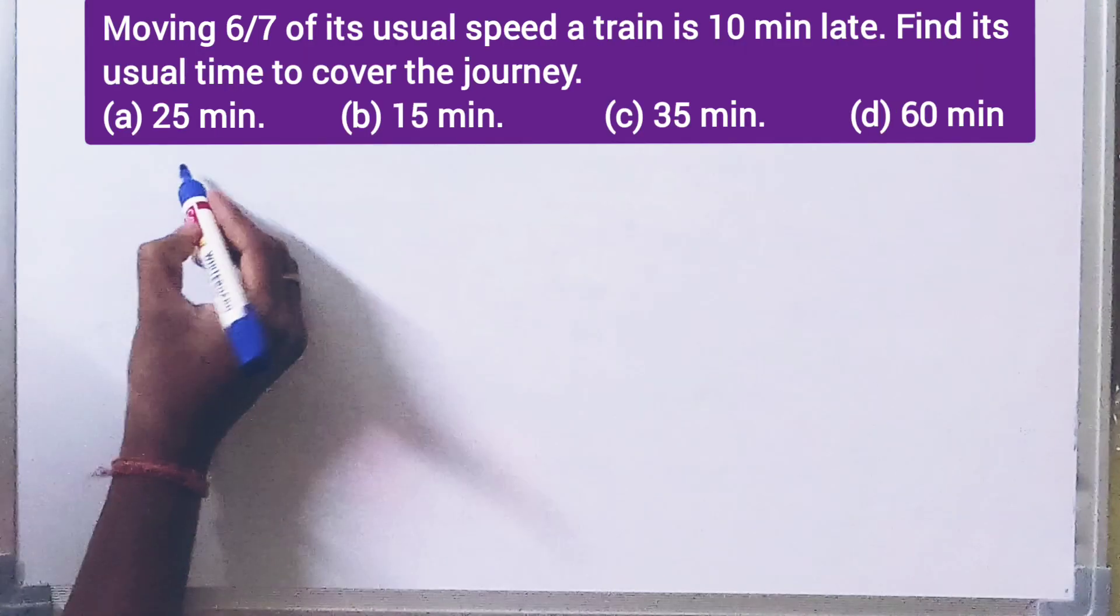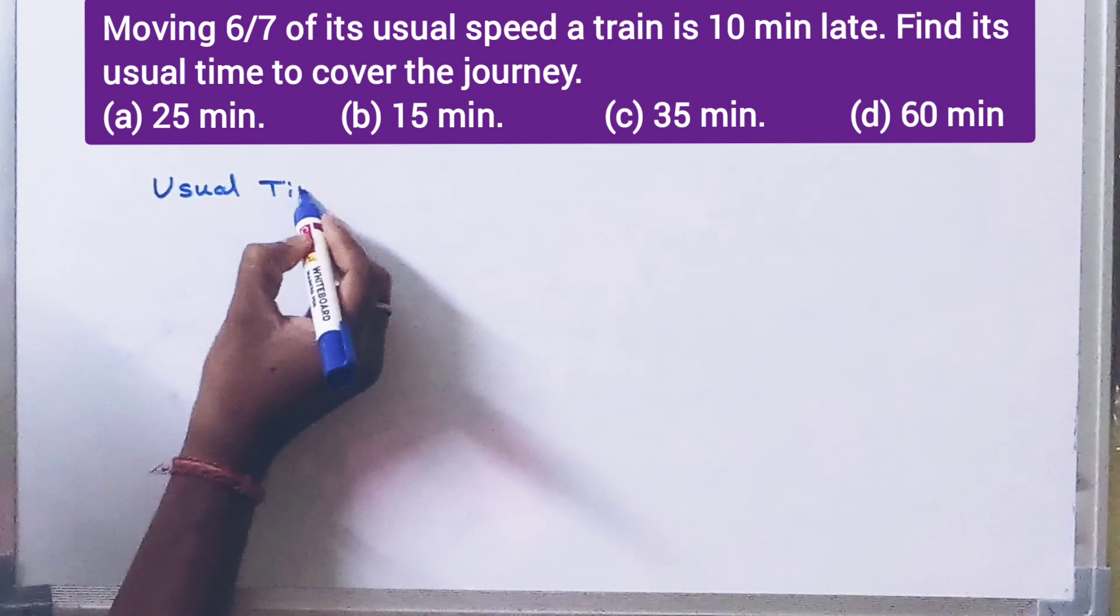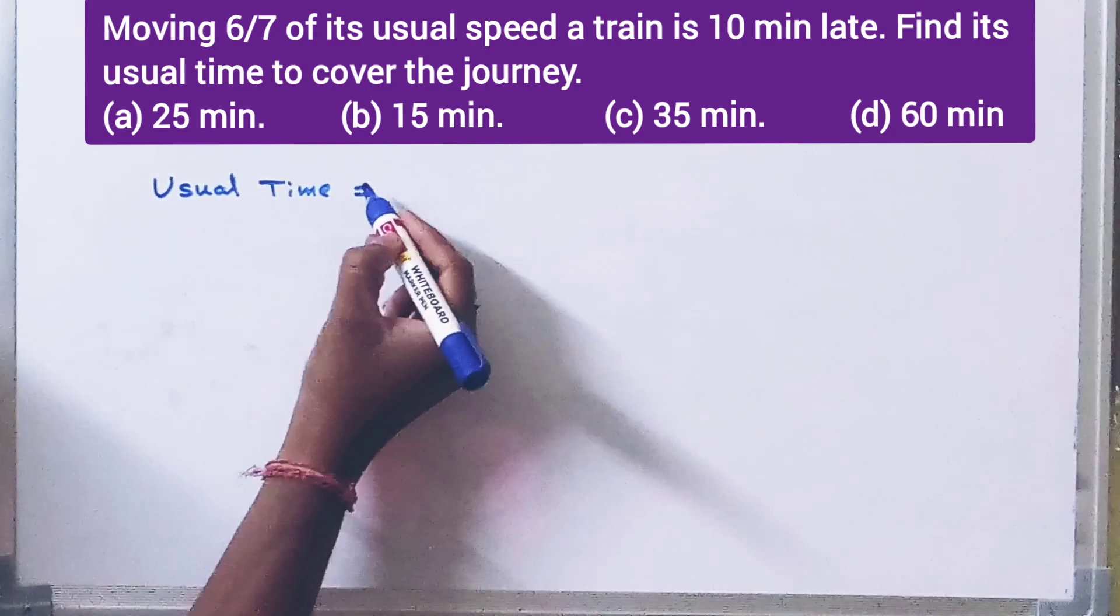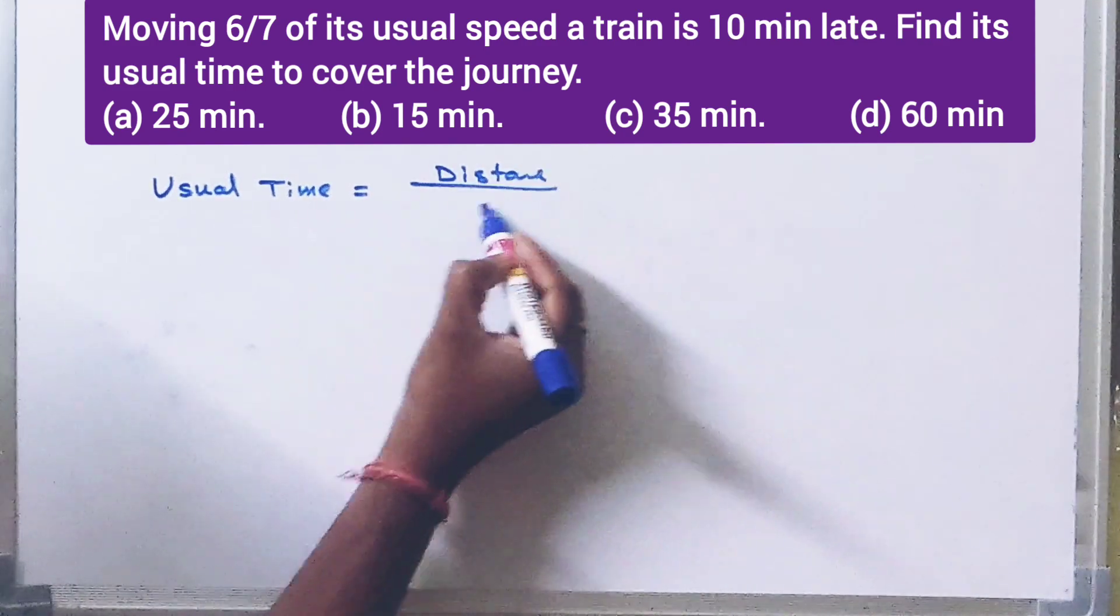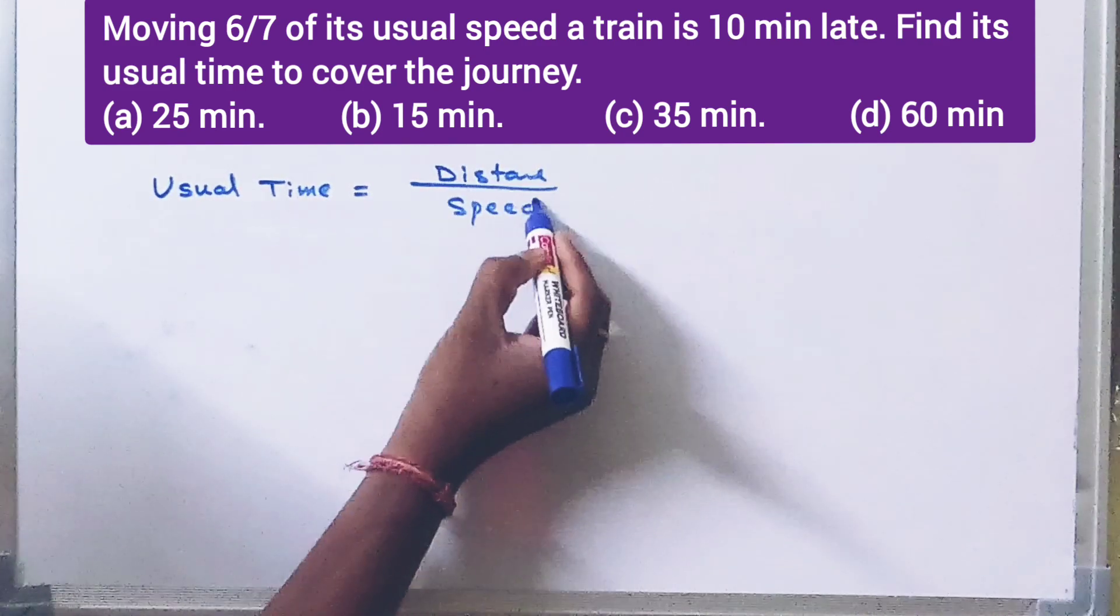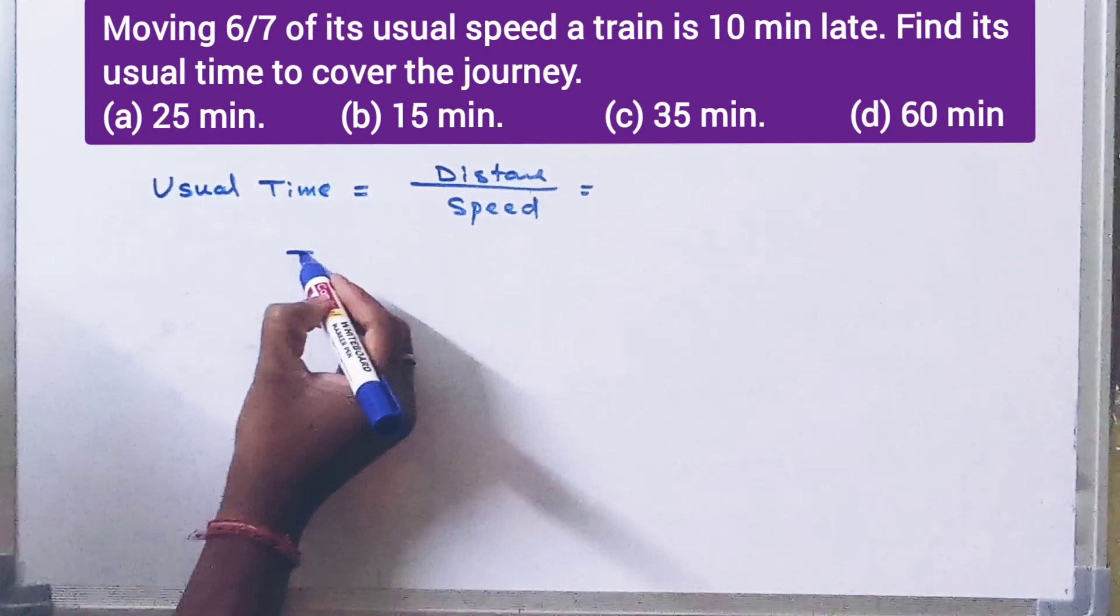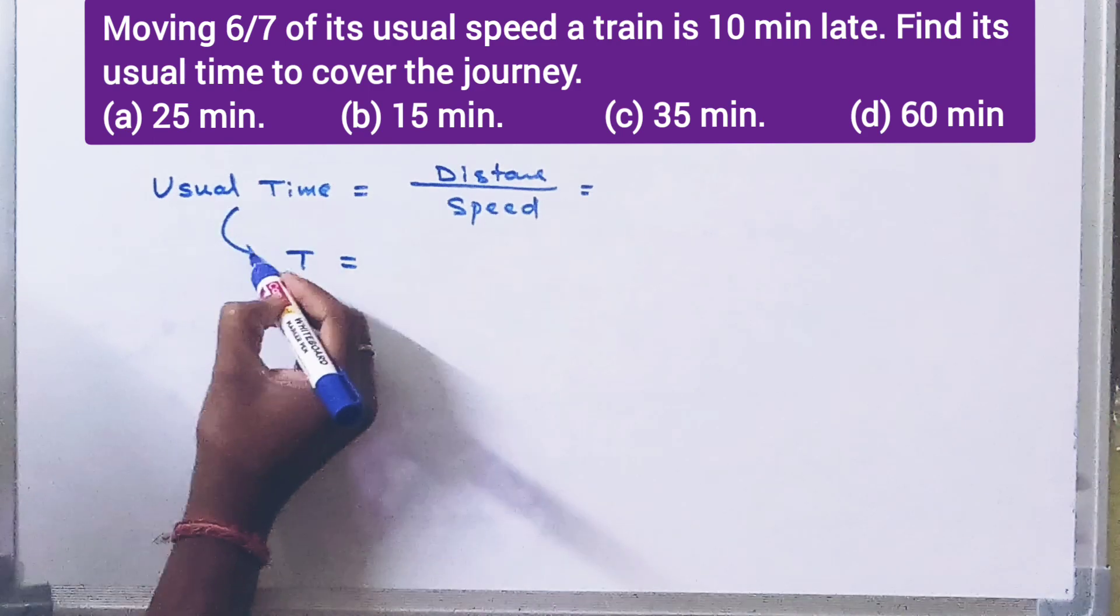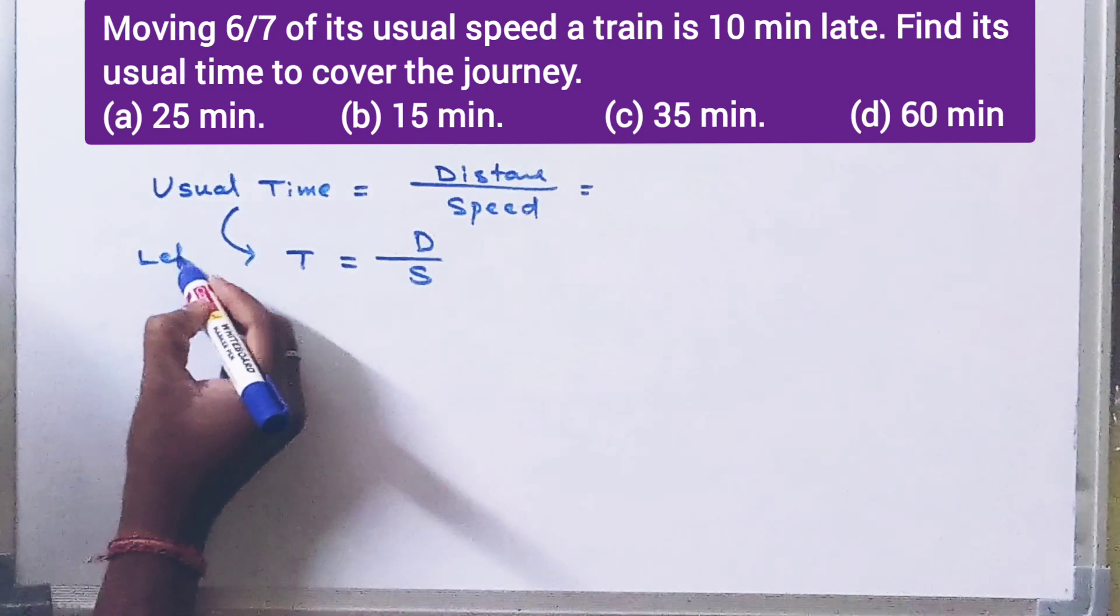Okay, so let me show you. The usual time is equal to distance by speed. Let the time equal D by S.